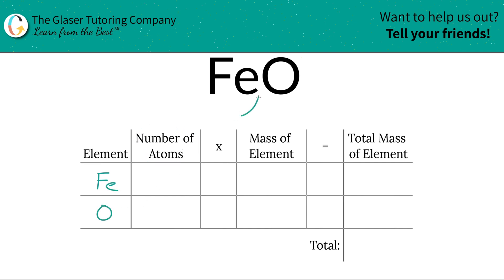Then we write down the number of atoms. That's where the subscripts come into play. If there's no subscript, assume it's a one. So there's one iron and there's also one oxygen.